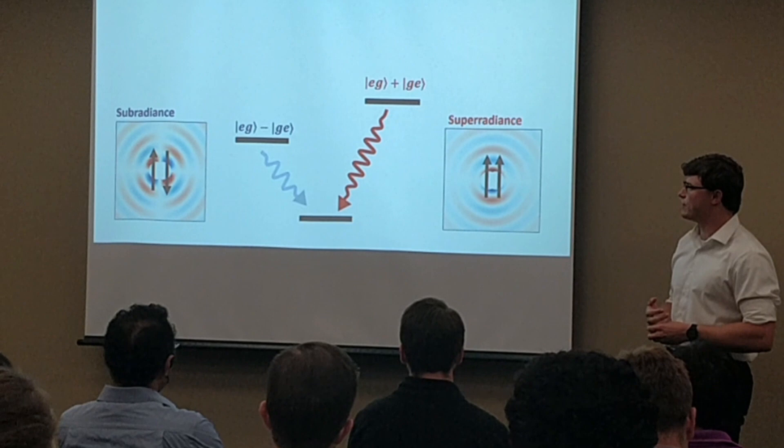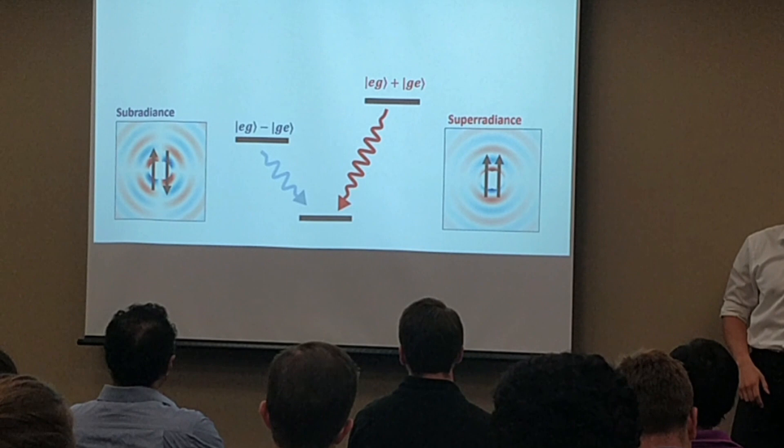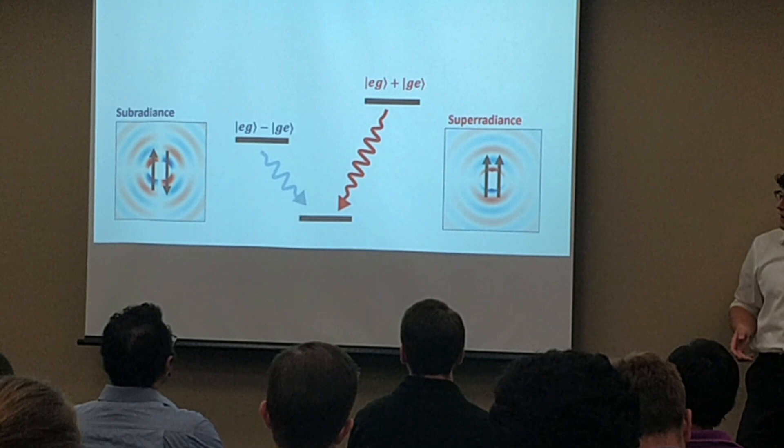These are known as subradiant and superradiant states, respectively. Subradiant and superradiant states are applicable to any situation where you want to engineer the way quantum systems interact with light.